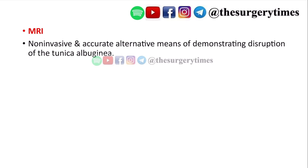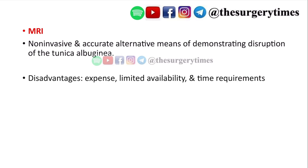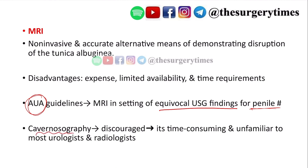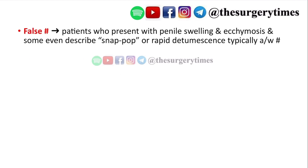MRI is a non-invasive and accurate alternative but has disadvantages: it is expensive, has limited availability, and requires more time. The AUA guidelines recommend MRI in the setting of equivocal ultrasound findings. In summary: first use history and physical examination; if doubt remains, go for ultrasonography; if USG is also equivocal, proceed to MRI. Cavernosography was done previously but is no longer recommended as it is time-consuming and unfamiliar to most radiologists.